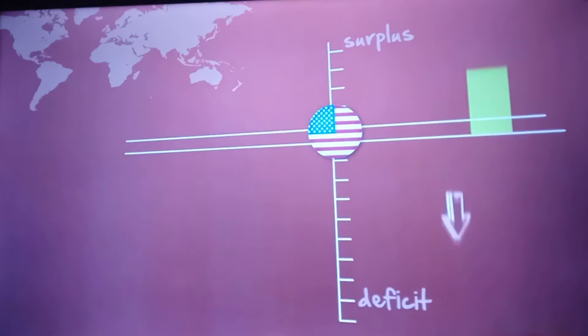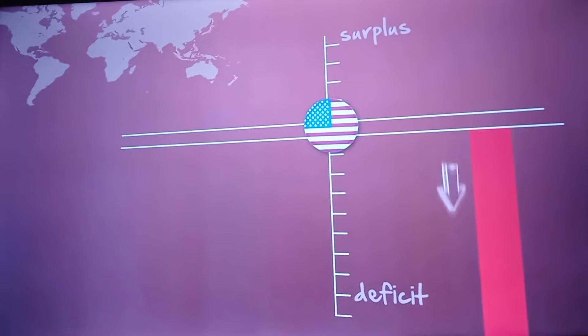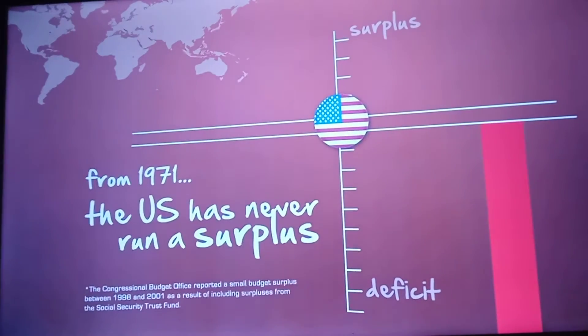Without any gold backing, countries ran perpetual deficits. If you look at this country from 1971 on, the U.S. has never run a surplus. Ever since we went off the gold standard, it's just been perpetual stimulus — good times, bad times, always run a deficit. What led Nixon to abandon the gold standard in 1971, although he claimed it was temporary, we've been waiting 40 years and we're still off of it.